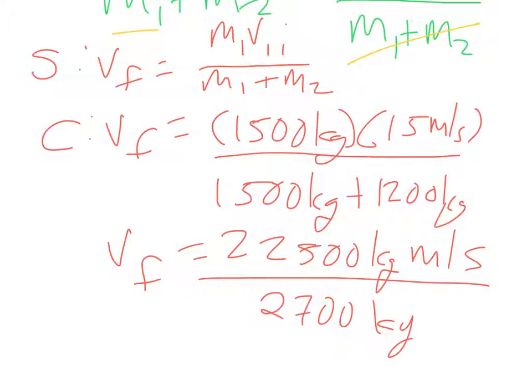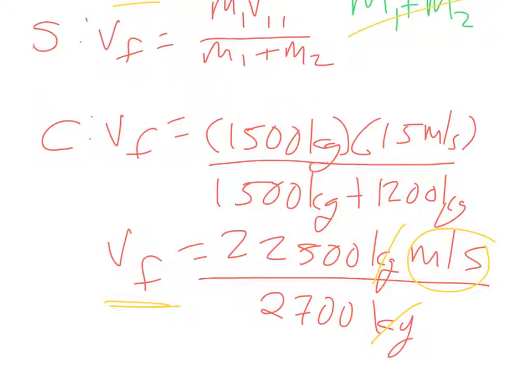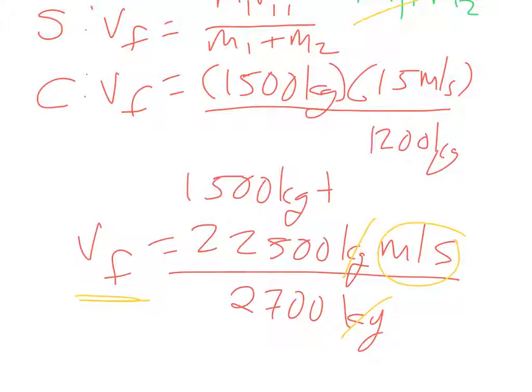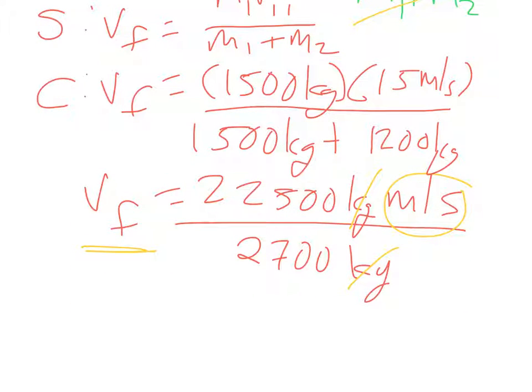So canceling units, I know kilograms cancels kilograms, this leaves me as meters per second, which is good because V should be in meters per second. So then I do 22,500 divided by 2,700, and that comes out to be 8.3 meters per second. All right, and now our problem's done.